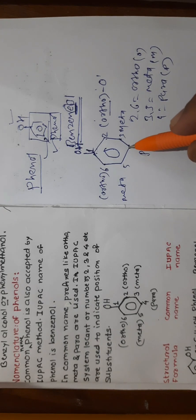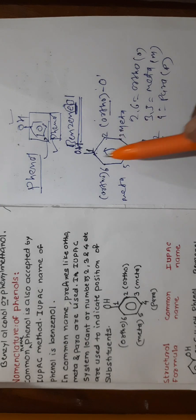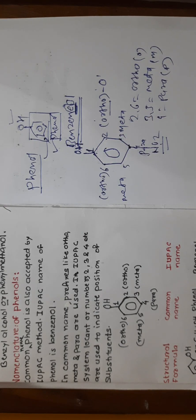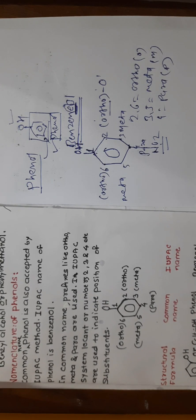For example, if a NO2 group is present at the fourth position (para position), the common name is para-nitrophenol and the IUPAC name is 4-nitrophenol. In common name method, prefixes ortho, meta, and para are used; in IUPAC method, numbers are used to denote positions.